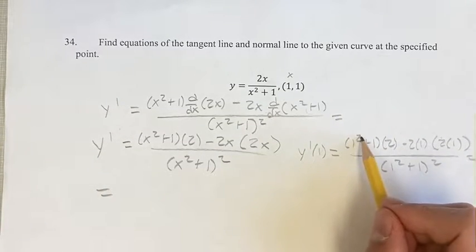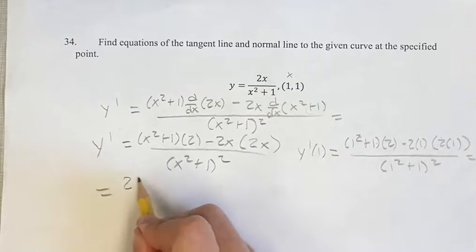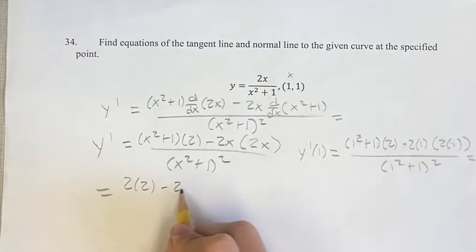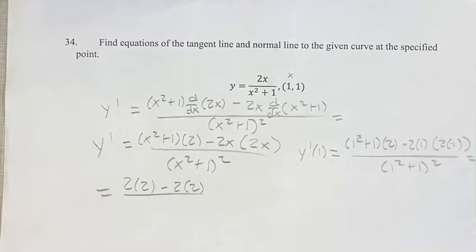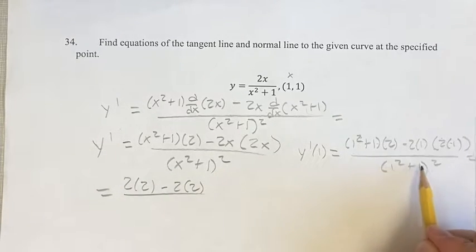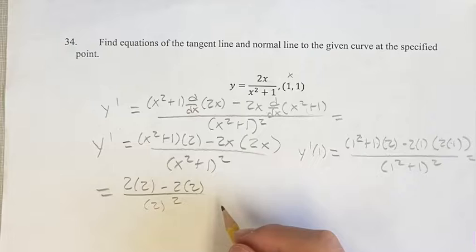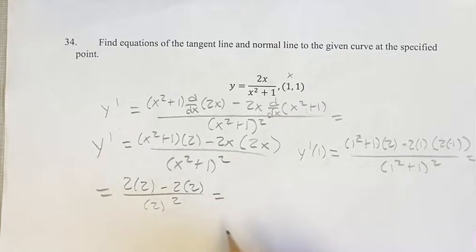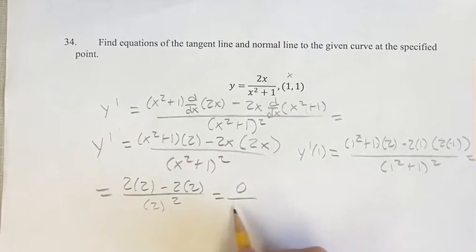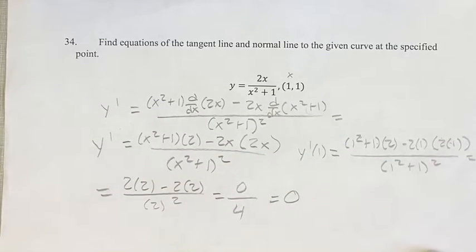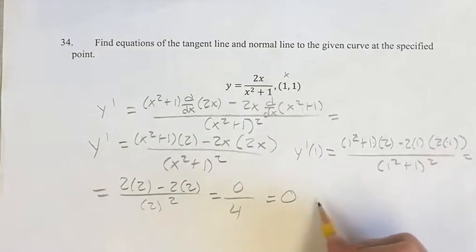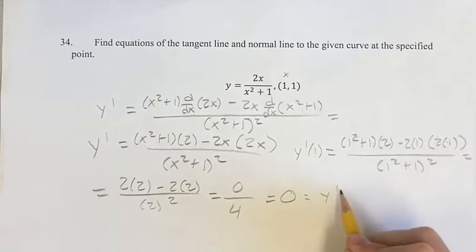Solving for this, 1 squared is 1, plus 1 is 2, so 2 times 2, minus 2 times 2, over 1 squared plus 1 is 2 squared. And solving this, we're going to have 2 times 2 minus 2 times 2 is 0, over 2 squared is 4, so this is going to be 0. So the derivative is 0 at 1.